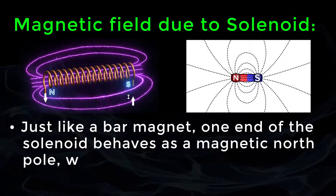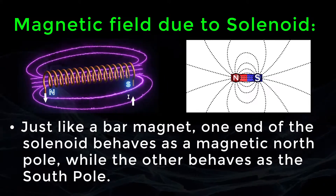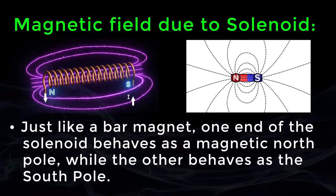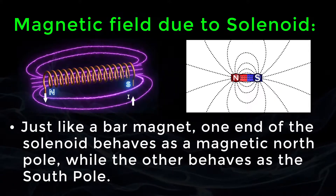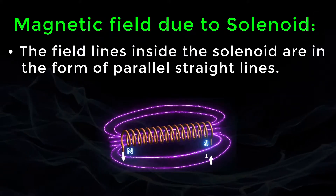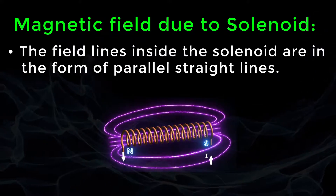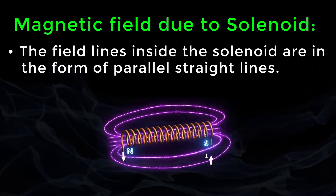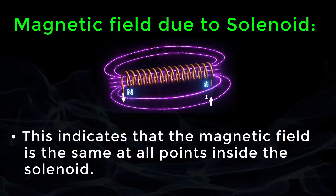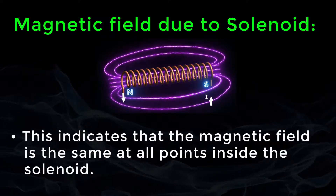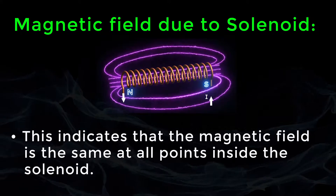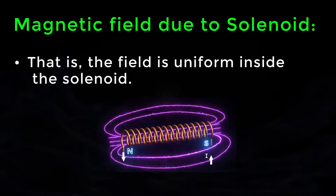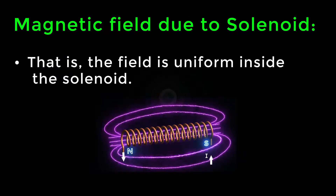Just like a bar magnet, one end of the solenoid behaves as a magnetic north pole while the other behaves as the south pole. The field lines inside the solenoid are in the form of parallel straight lines. This indicates that the magnetic field is the same at all points inside the solenoid — that is, the field is uniform inside the solenoid.